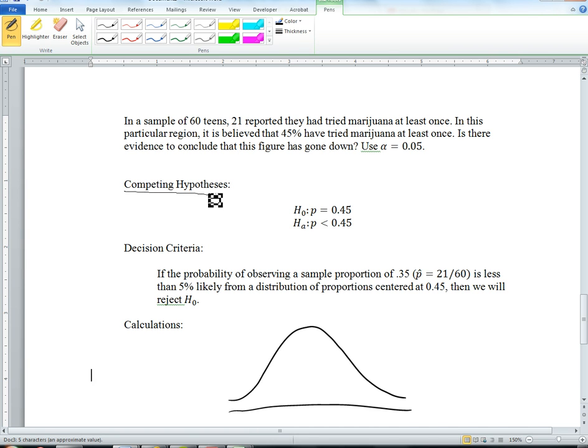So we state our competing hypotheses, which are that the population proportion of teens that have tried marijuana is 0.45 compared to, we want to determine, has it gone down? Is it less than 0.45?